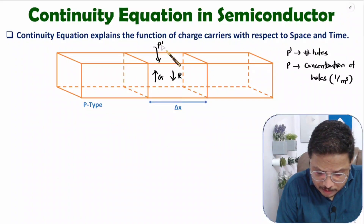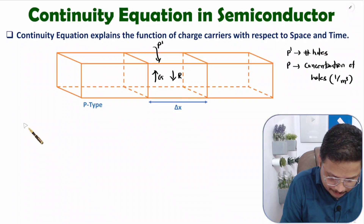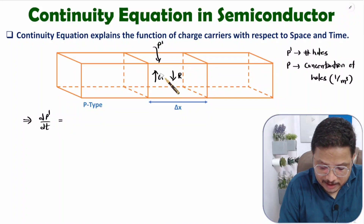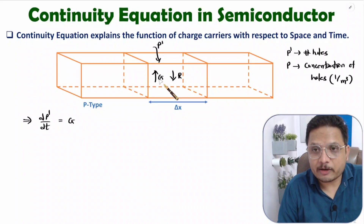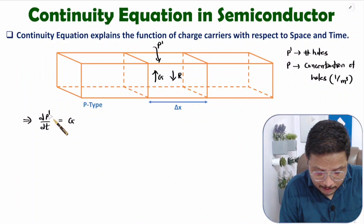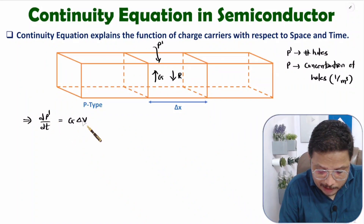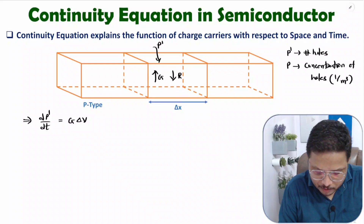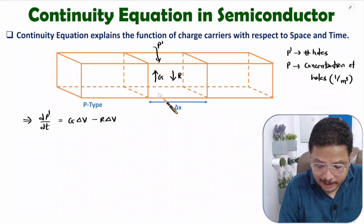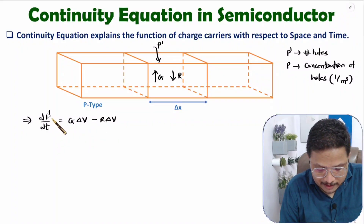Let's derive how the number of holes changes with respect to time. dp'/dt explains the number of holes changing with respect to time. That equals generation g — the unit of generation rate is number of holes generated per volume per second — multiplied by ΔV (volume of the Δx block), minus recombination r times ΔV. So generation minus recombination times volume explains how many holes are generated with respect to time.